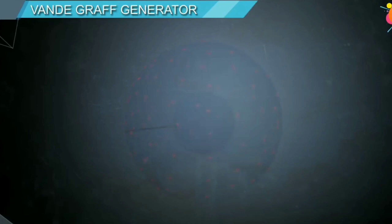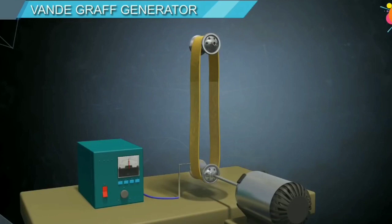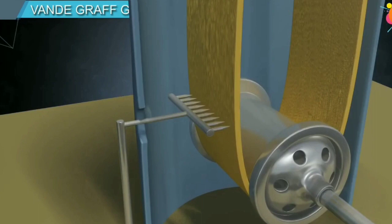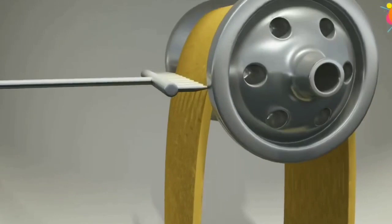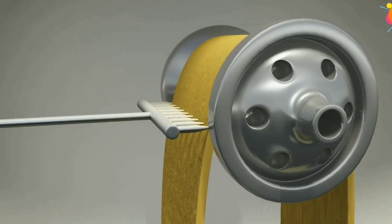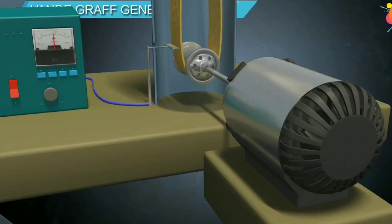A simple Van de Graaff generator consists of a belt made of rubber running over a pair of rollers, one of which is surrounded by a hollow metallic sphere mounted on an insulated stand. An electron emitter in the form of a comb made up of sharp metal points is positioned near the lower roller, pointing towards the rubber belt. The comb is maintained at high positive voltage by external supply. Another comb called the receiver comb is positioned near the upper roller and is connected to the hollow metal sphere. A motor is connected to the bottom roller in order to move the belt.